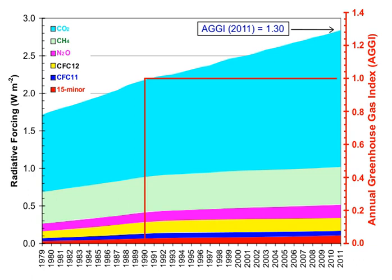A greenhouse gas is a gas that absorbs and emits radiant energy within the thermal-infrared range. Greenhouse gases cause the greenhouse effect.